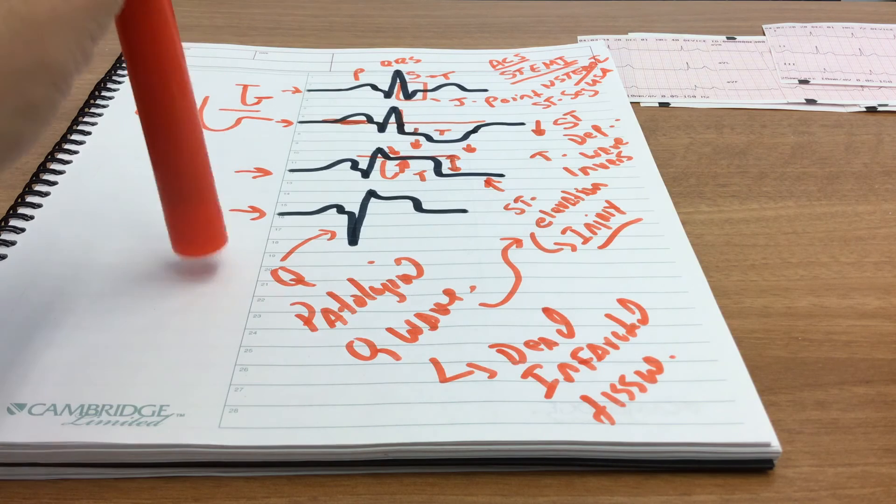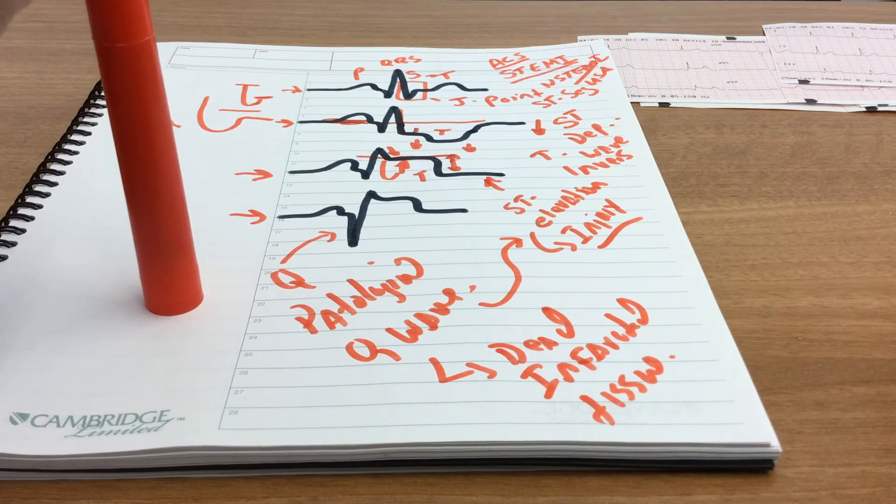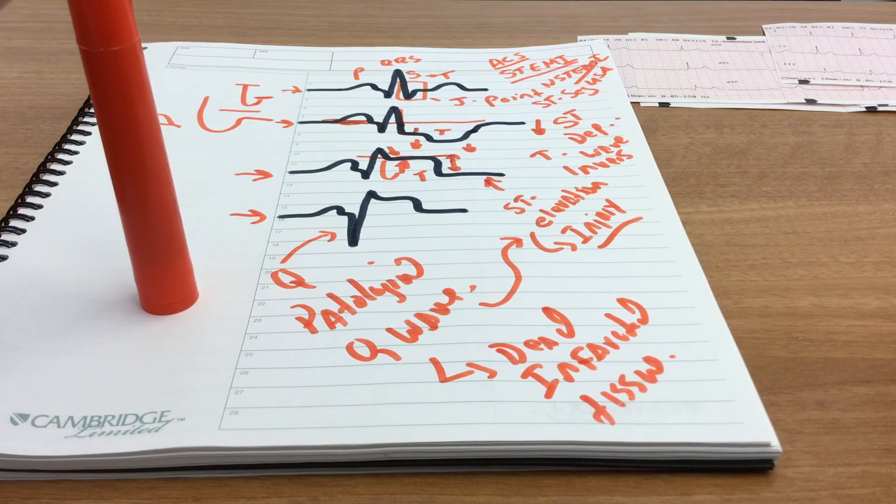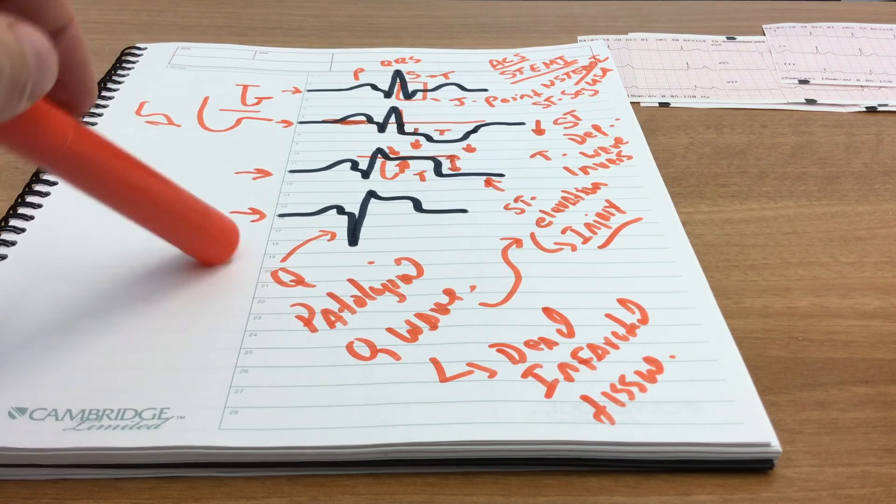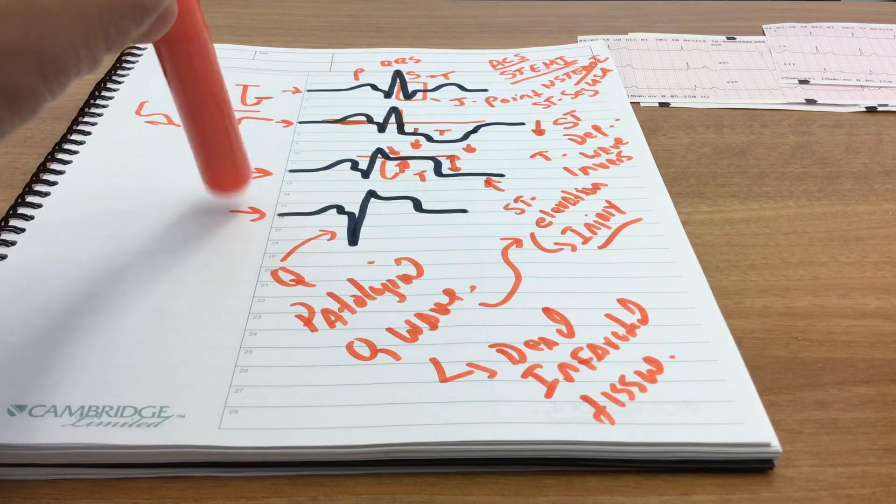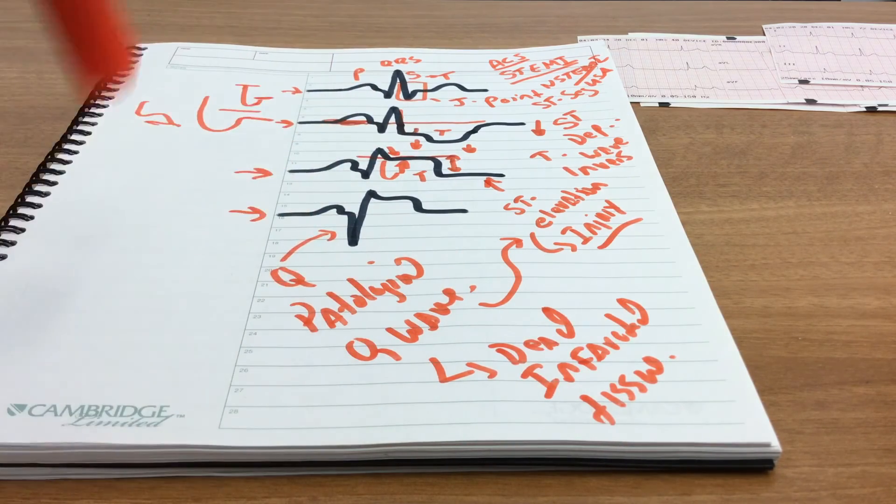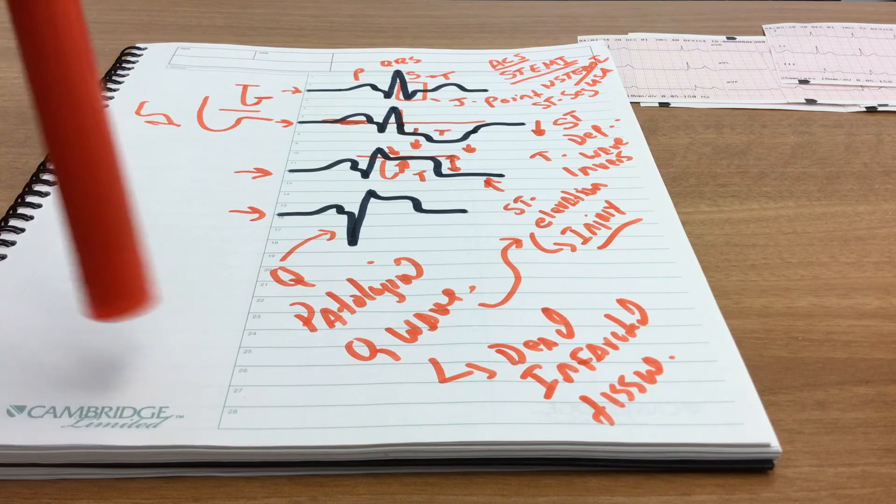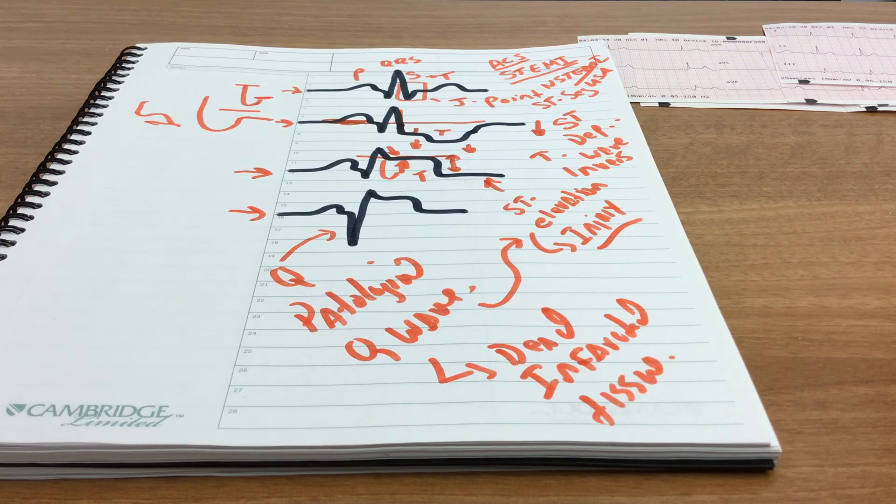What are our thresholds? Our thresholds are fairly varied and can change depending on other underlying problems, such as bundle branch blocks, which make this very difficult. Bundle branch blocks are a big confounder when it comes to the 12-lead ECG. But in general...